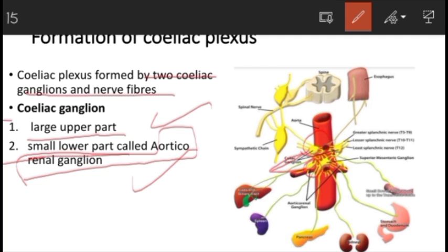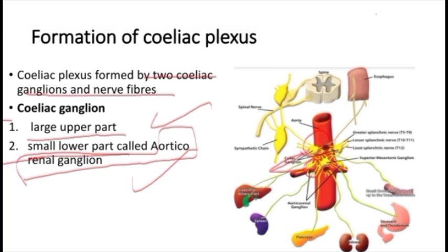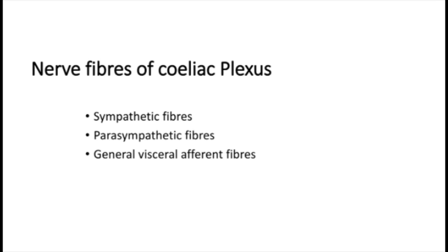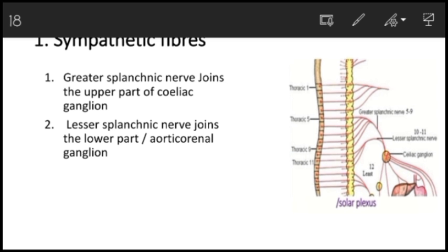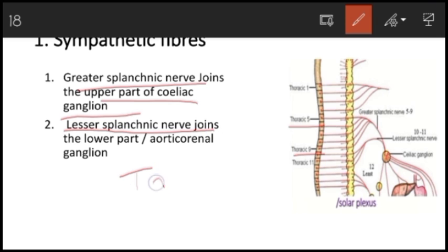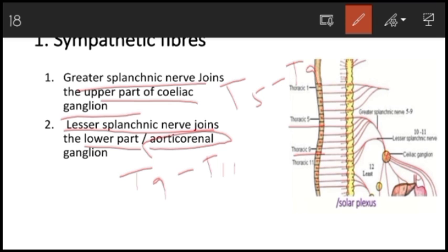There are three sets of nerve fibers in the celiac plexus: sympathetic fibers, parasympathetic fibers, and general visceral afferent fibers. Regarding the sympathetic fibers, the greater splanchnic nerve arising from the thoracic 5th to 9th ganglion joins the upper part of the celiac ganglion, while the lesser splanchnic nerve arising from thoracic 9th to 11th ganglion joins the lower part, that is the aorticorenal ganglion. These fibers arise as preganglionic fibers, synapse in the celiac and aorticorenal ganglia, and leave as post-synaptic fibers.